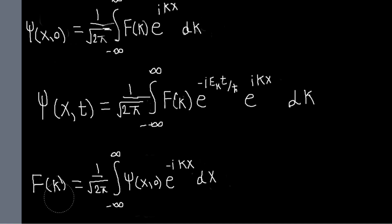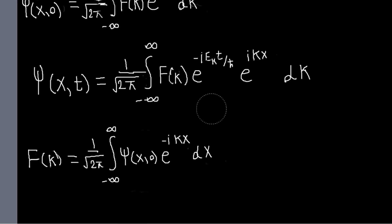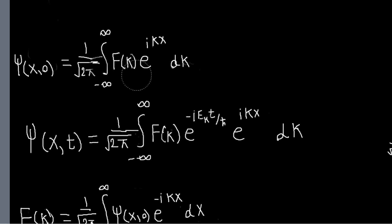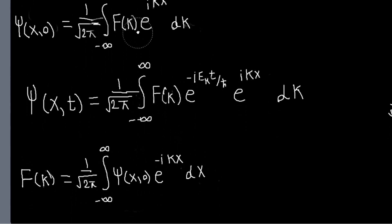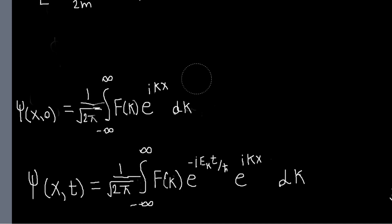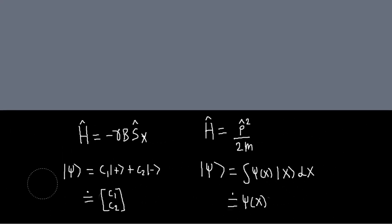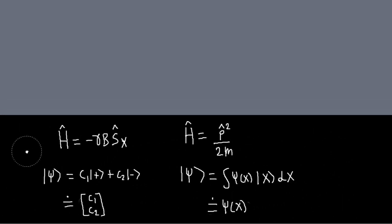So we start here, use this equation to get f(k), then plug that in to get ψ(x, t). At this point it's worth looking at how we end up with a Fourier transform, and seeing how it relates to what we've been doing — showing how it's really not anything different from what we've encountered before.